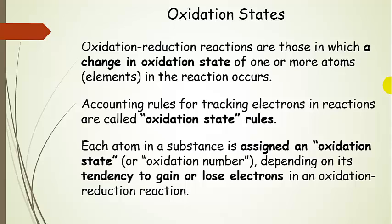Technically speaking, oxidation-reduction reactions are those in which a change in oxidation state of one or more atoms in the reaction occurs. Going back to the aluminum reaction, that aluminum metal changed its oxidation state in the aluminum oxide layer. We're going to learn how to figure that out and track it using a series of accounting rules called oxidation state rules, which track electrons in reactions. There's a process through which we assign an oxidation state or oxidation number to each atom in the reaction, depending on its tendency to gain or lose electrons.